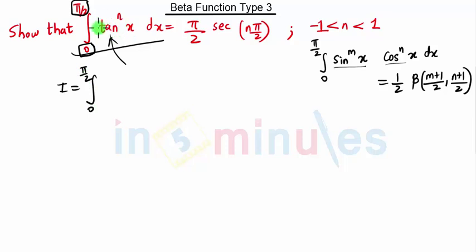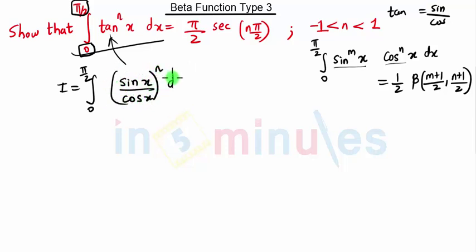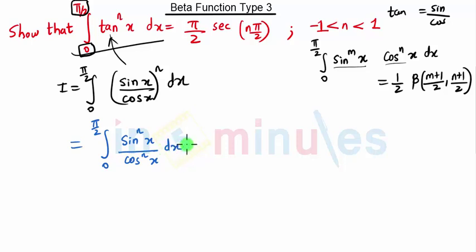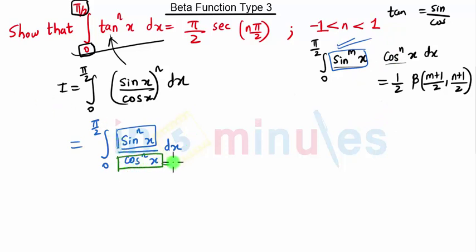We have I equal to the integration from 0 to π/2 of tan^n(x) dx. Since tan(x) = sin(x)/cos(x), this becomes the integral of (sin(x)/cos(x))^n dx, which equals the integral from 0 to π/2 of sin^n(x) / cos^n(x) dx. We have sin^n(x) in the numerator, but we need the cosine term in the numerator as well, so we move cos^n(x) to the numerator, giving cos^(−n)(x).